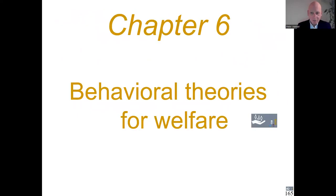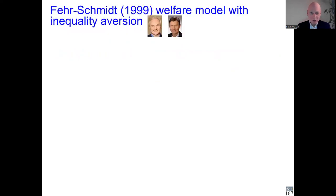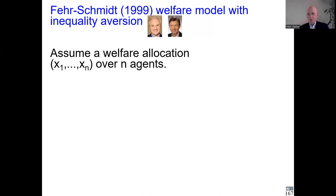We go to chapter six: welfare theories, and I'm going to present the Fehr-Schmidt model of inequality aversion. That will be the main thing in this chapter. They introduced a welfare model capturing inequality aversion — a very simple but very tractable model that captures the main phenomena. It's one of the most cited papers in economics. We assume a welfare allocation with n agents — for instance, the Netherlands has almost 18 million inhabitants, so n would be almost 18 million.